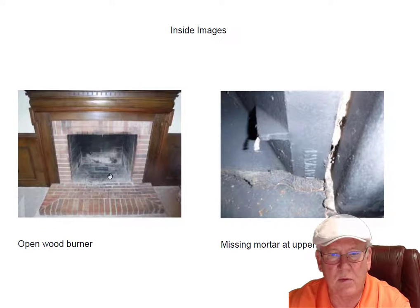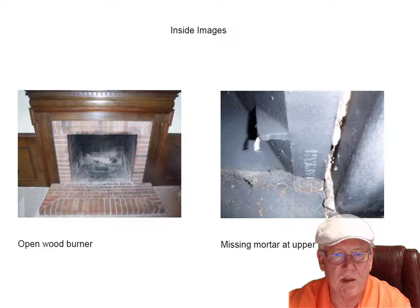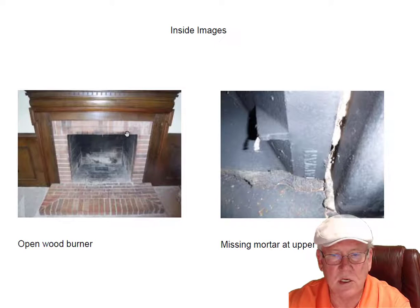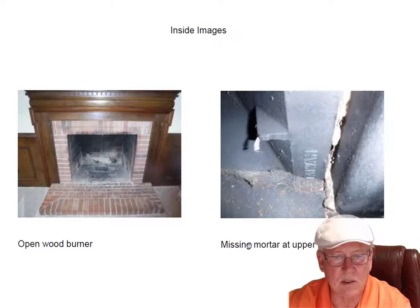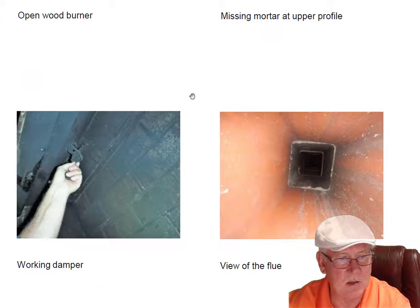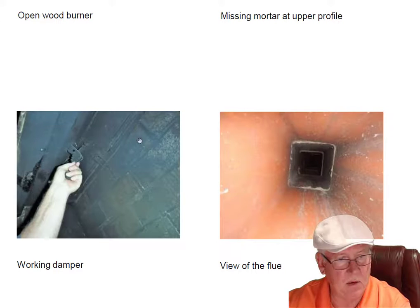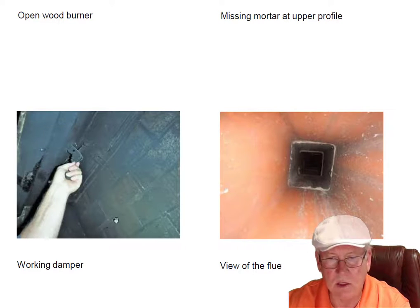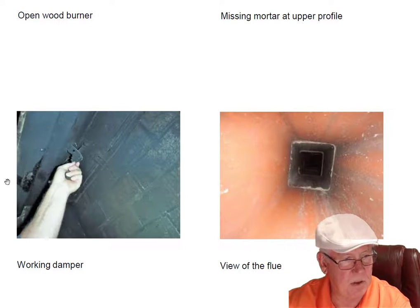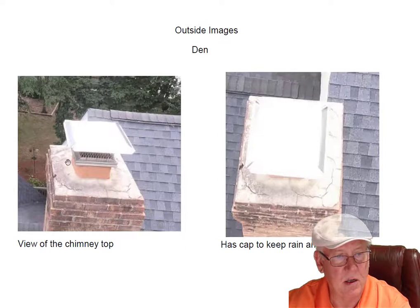So it's an open wood-burning fireplace. We're missing a little mortar in the upper profile — this is if you stuck your head in and looked straight up, you'd find it just up in this area right here. You can see the mortar missing. That's a code violation; it needs to be sealed with refractory cement. I'm giving you a price on doing that. But it has a working damper, and the flue system looks good — no problems there.